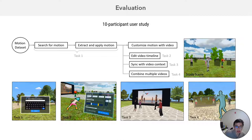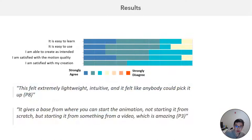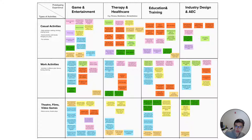To understand the user experience, we conducted a 10-participant user study. During the study, participants completed tasks with different features implemented in Video Post VR, such as editing a video timeline, creating a multi-user scenario, or combining different motions from different videos. The major takeaway is that participants found Video Post VR easy to learn and easy to use, and they were satisfied with the motions they created. Participants noted it was extremely lightweight and intuitive, and felt that anybody could pick it up — and that it could be used as a prototyping tool to quickly generate different kinds of human motions.